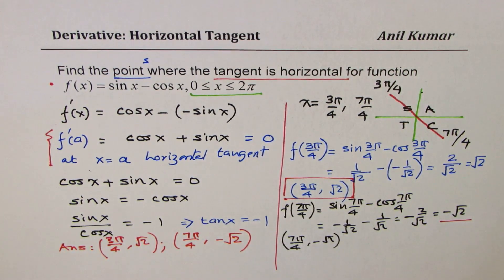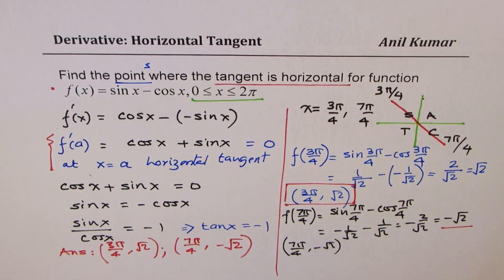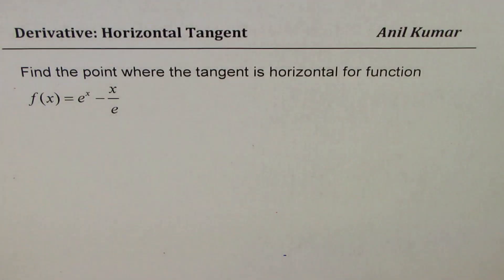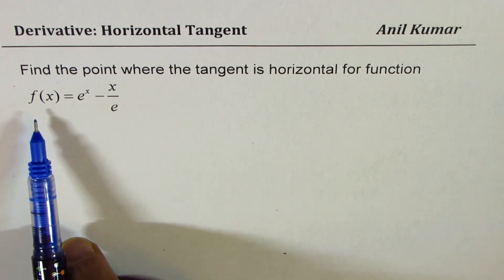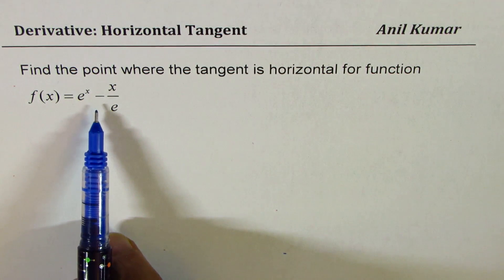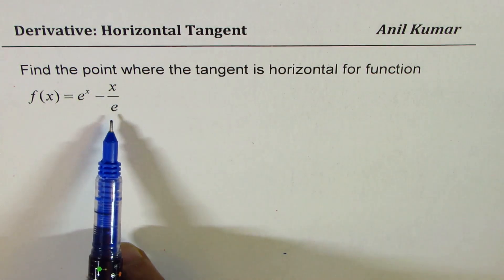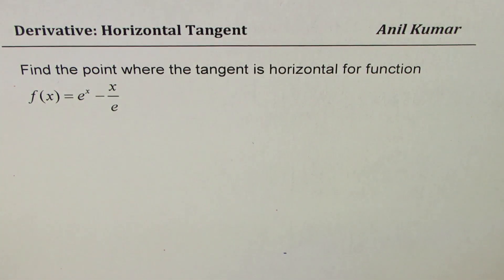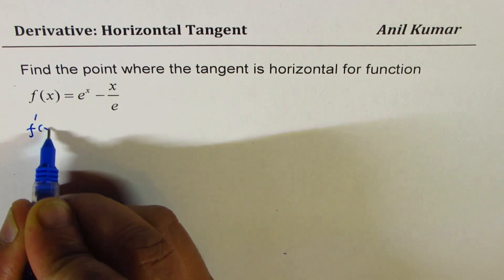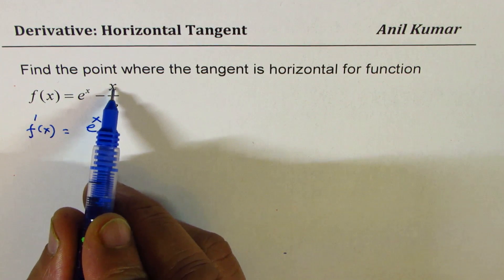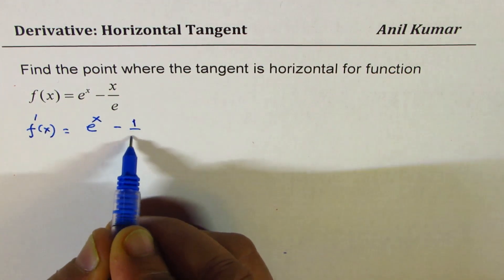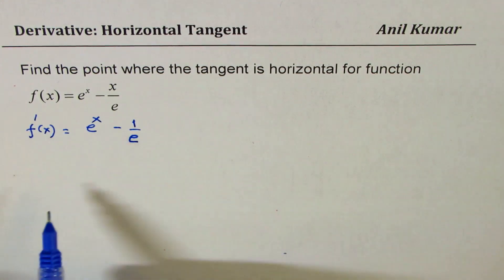So that is the solution — the horizontal tangent occurs at two points. Now let's find the points where the tangent is horizontal for the function f(x) = e^x − x/e. Remember, e is an irrational number but it's a constant. Let's find the derivative: the derivative of e^x is e^x, and the derivative of x is 1, so we get f'(x) = e^x − 1/e.